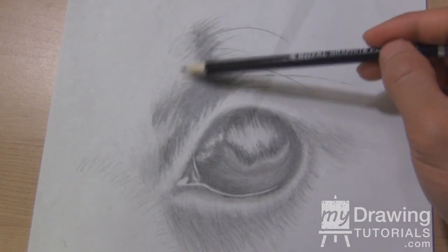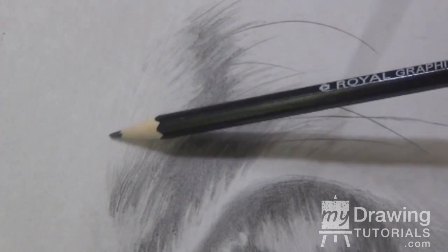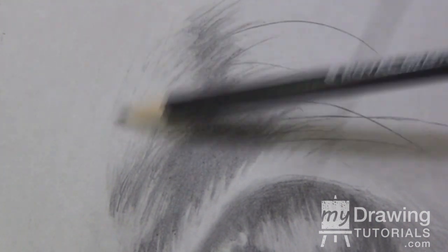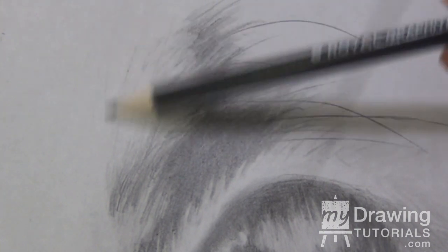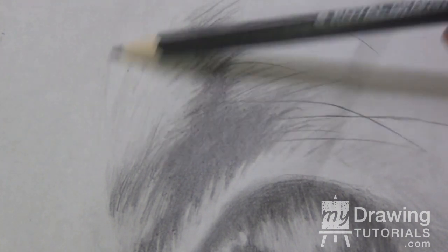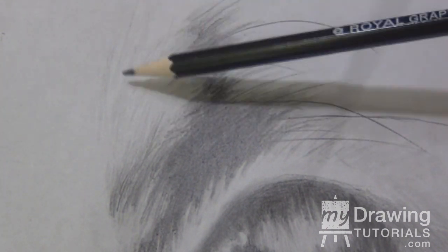And then we're going to pick out some highlights with the kneaded eraser later. So the most important thing here is to keep your touch light, vary your strokes and be sure to mind the direction of the fur flow.